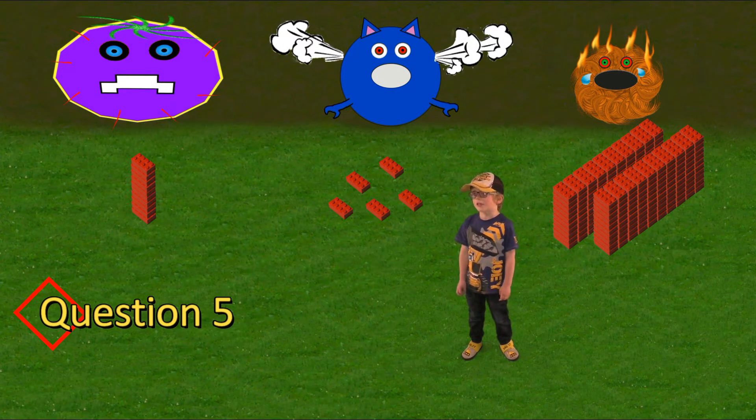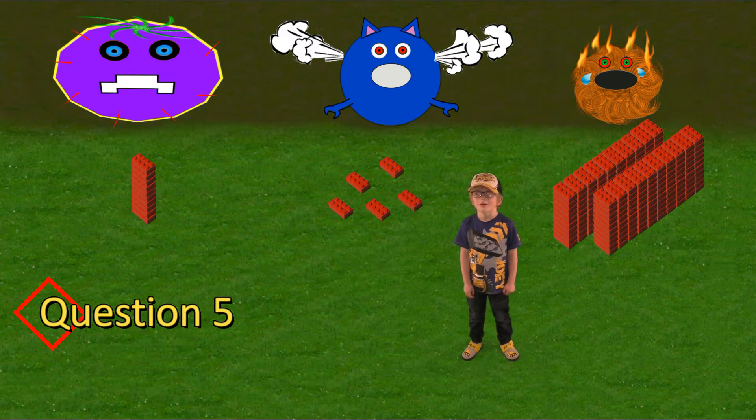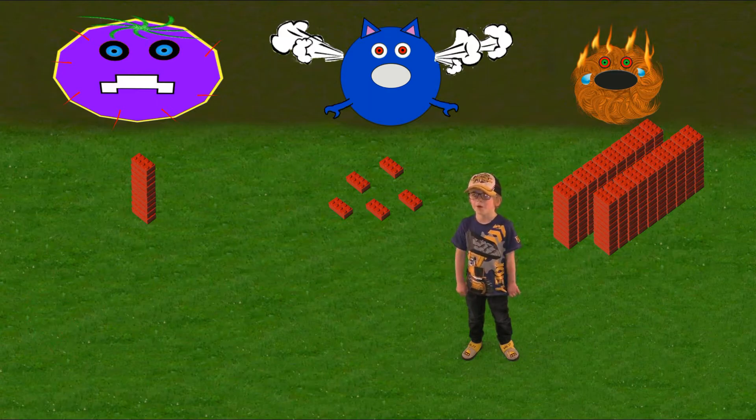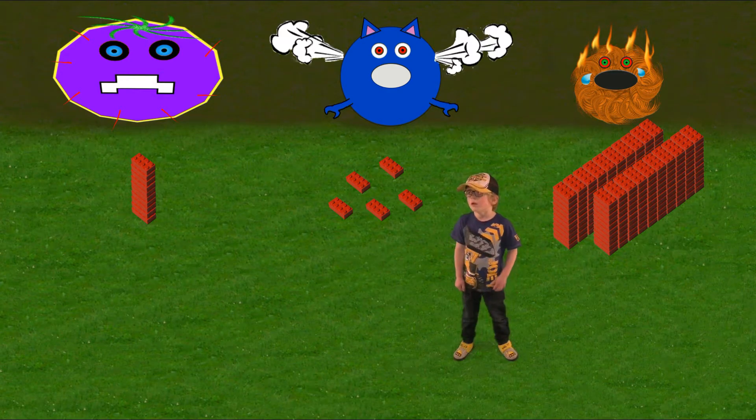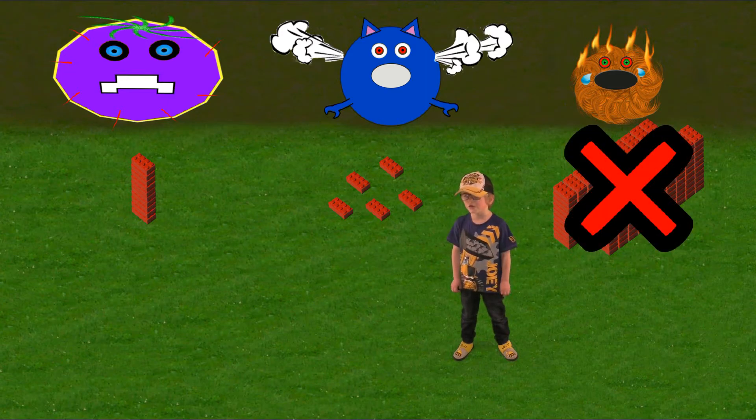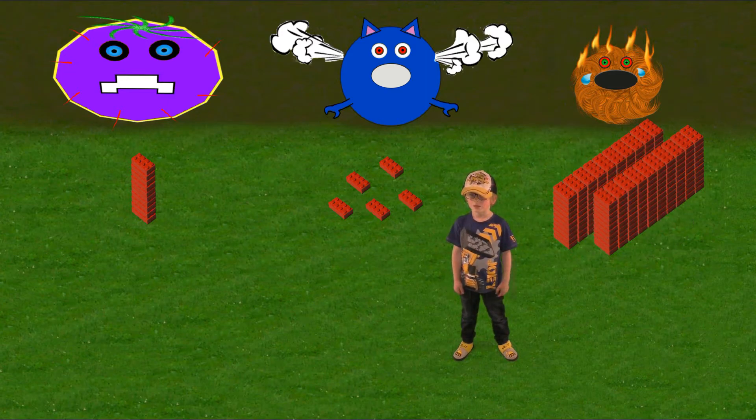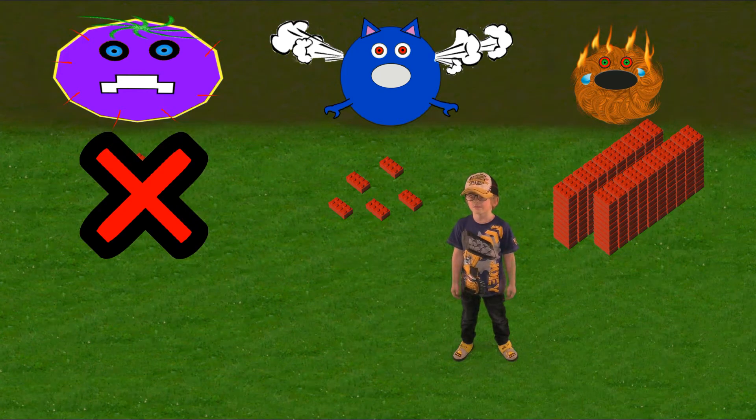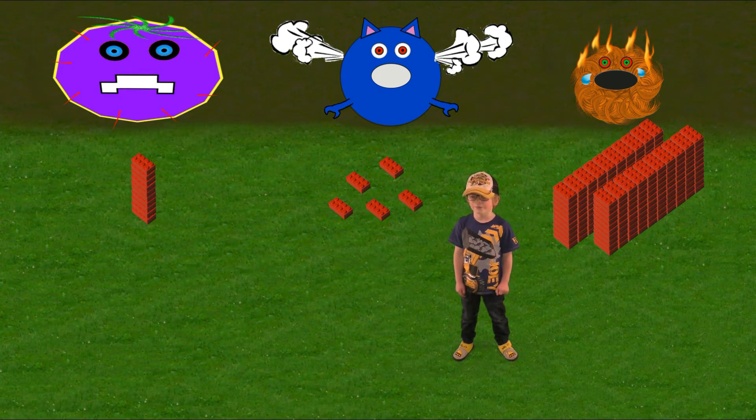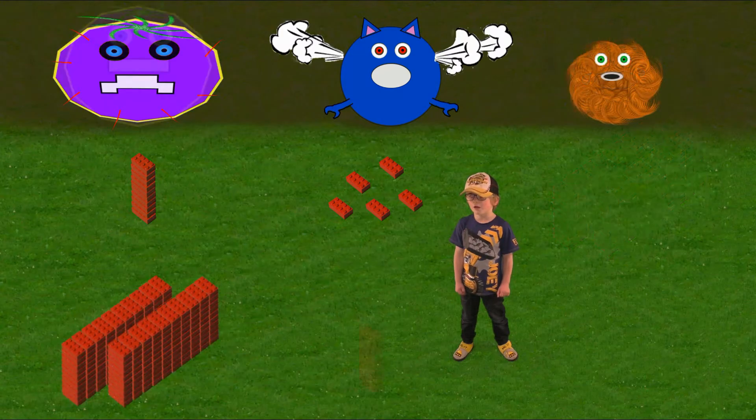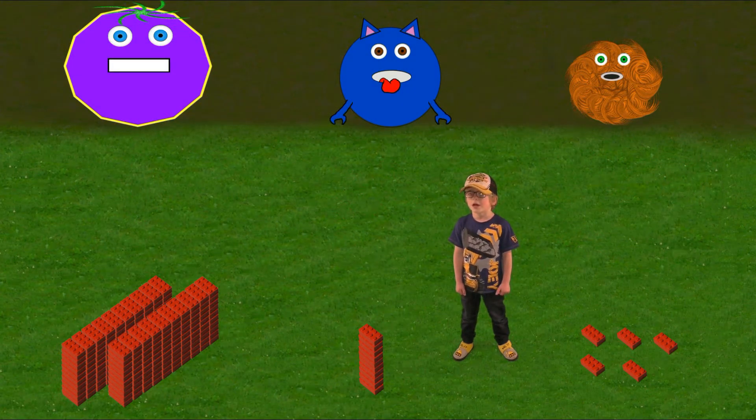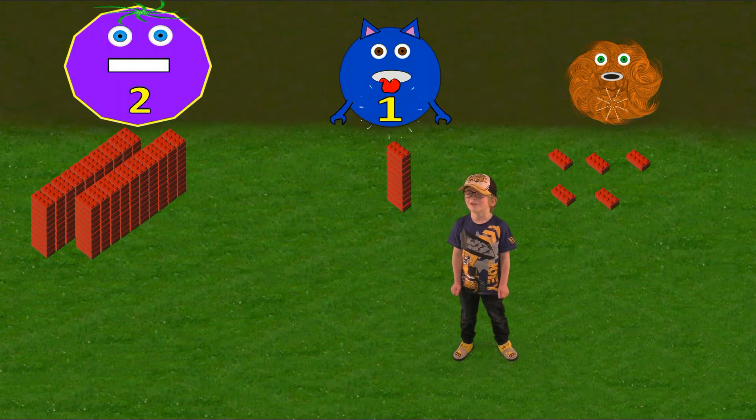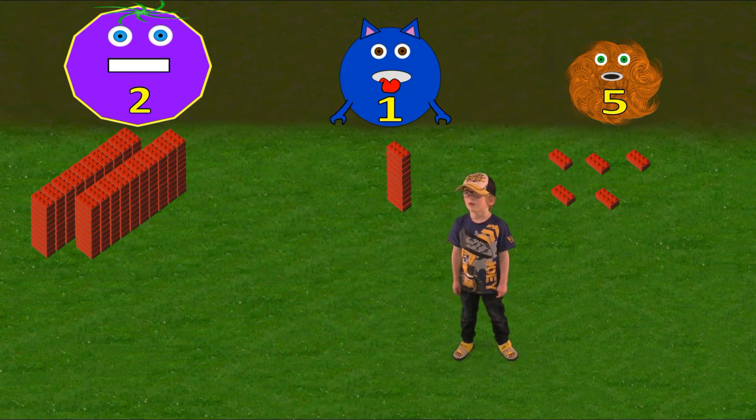This one is a bit tricky. Can you see what's gone wrong? The monsters have the wrong piles in front of them. The ones monster can't count hundreds, he only works with ones. The tens monster only wants tens and the hundreds monster only wants hundreds. They will get mad. Let's sort the bricks in the right order. Now let's put them in the correct places. We have two hundred and fifteen. Nice one.